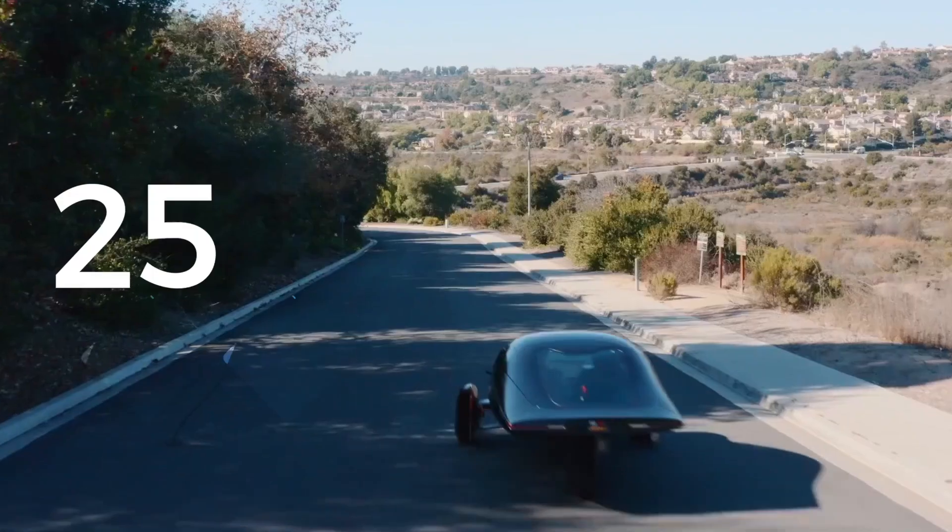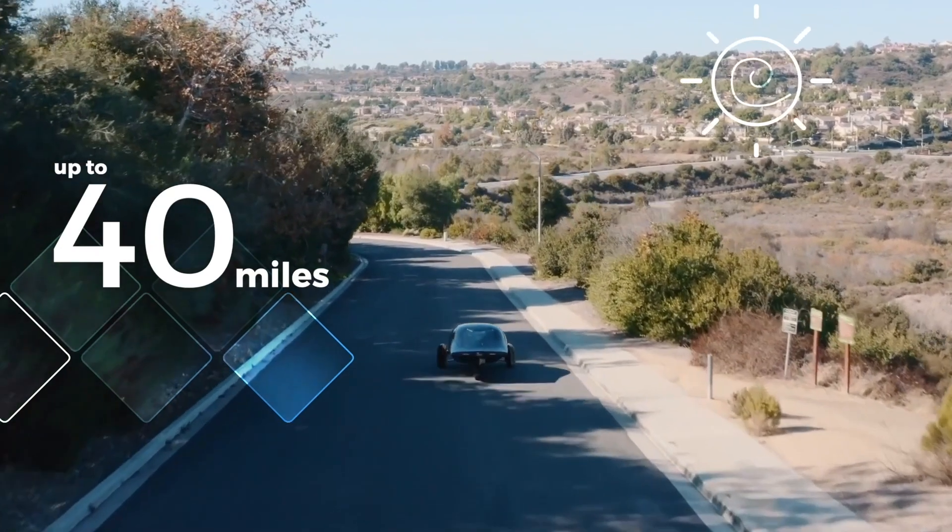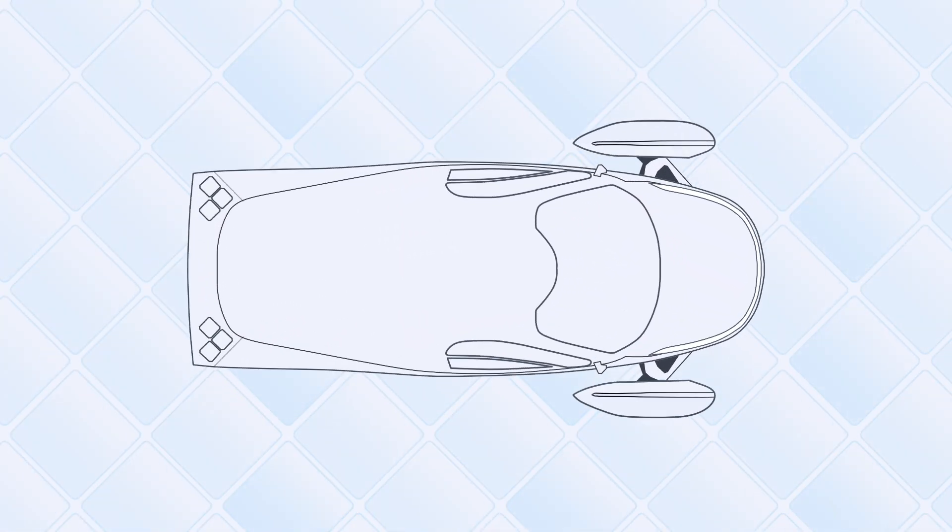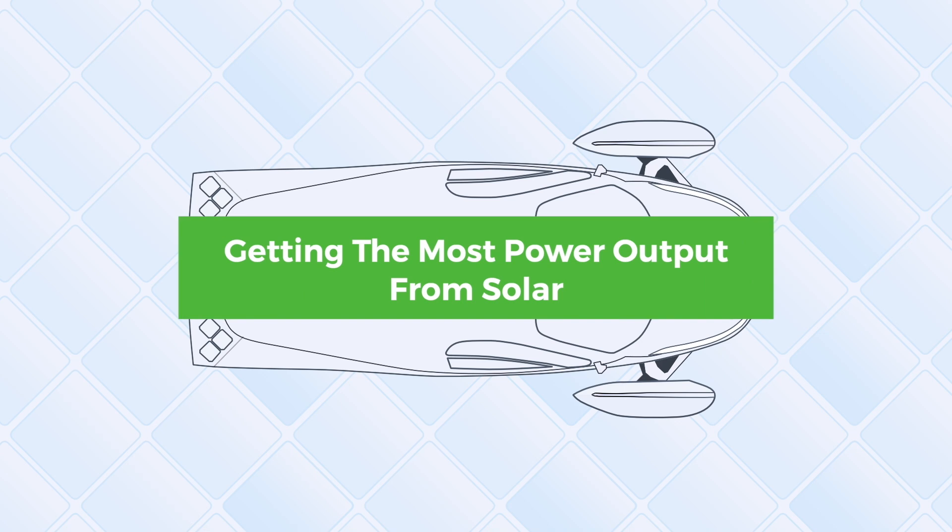You already know that Aptera gets up to 40 miles of free solar power driving per day. So today we are going to talk science and explain how we get as much solar power as possible from our integrated solar package.